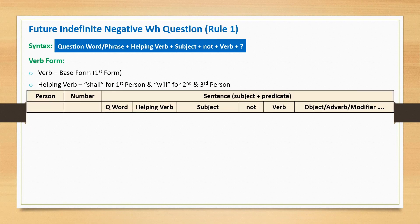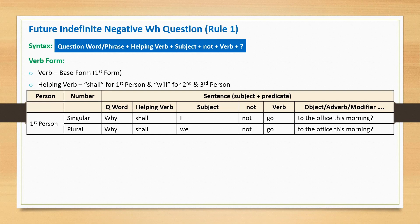Consider the following sentences. First person singular: 'Why shall I not go to the office this morning?' This sentence starts with question word 'why', followed by helping verb 'shall', subject 'I', negative word 'not', main verb 'go', and a question mark. First person plural: 'Why shall we not go to the office this morning?'